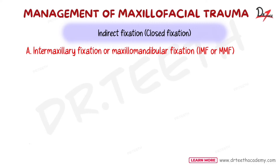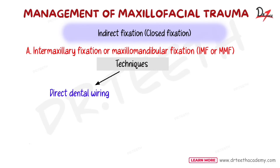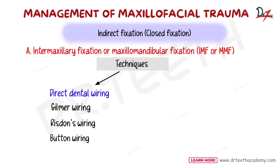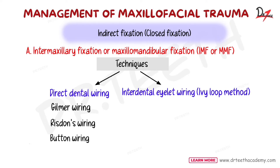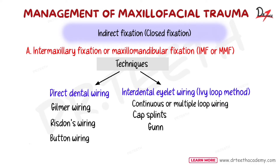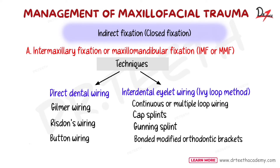IMF can be achieved through various techniques: direct dental wiring such as Gilmer wiring, Ritson wiring, and button wiring; interdental eyelet wiring (IV loop method); continuous or multiple loop wiring; cap splints; gunning splint; bonded modified orthodontic brackets; and intermaxillary fixation screws. That gives us a total of eight methods of doing IMF.